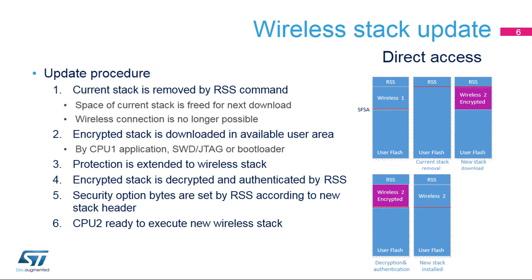This slide presents the direct access procedure for updating the wireless stack. The procedure is automatically performed by the RSS firmware once the update command has been sent by the bootloader. First, the current wireless stack is removed. Then, the encrypted and signed new wireless stack is downloaded in the flash memory. Sensitive operations of decryption, integrity, and authentication checks are done by RSS firmware inside the protected flash memory area. In the last step, option bytes related to the wireless execution configuration are set with the proper values, and the wireless stack becomes active.